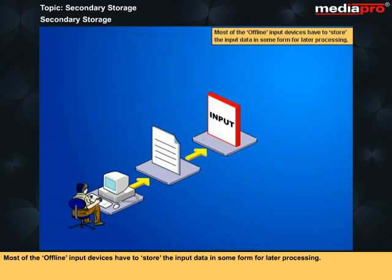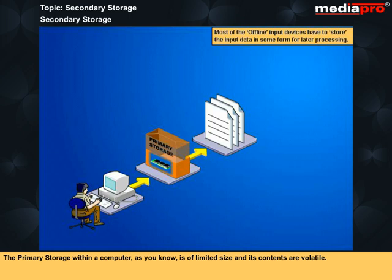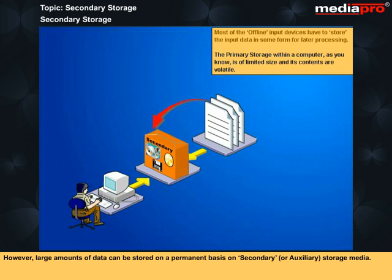Most of the offline input devices have to store the input data in some form for later processing. The primary storage within a computer is of limited size and its contents are volatile. However, large amounts of data can be stored on a permanent basis on secondary or auxiliary storage media.